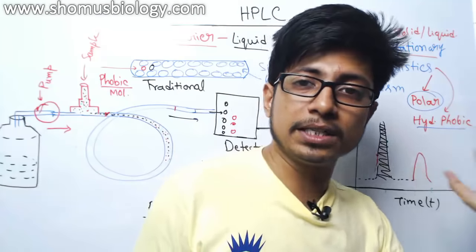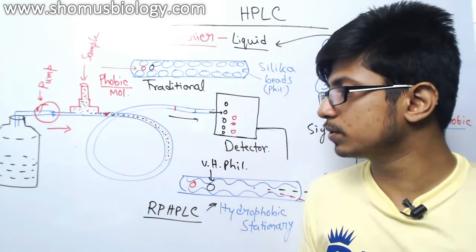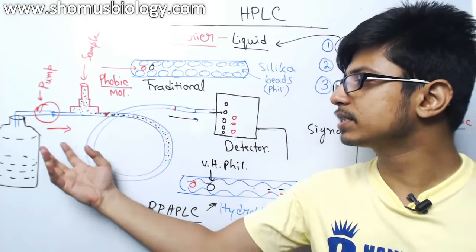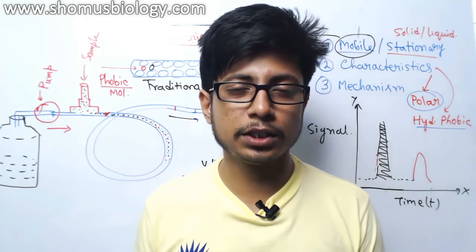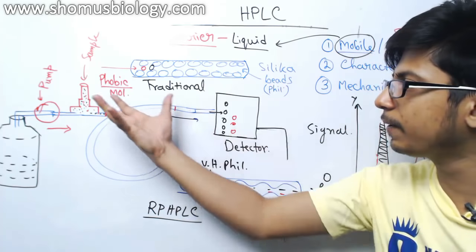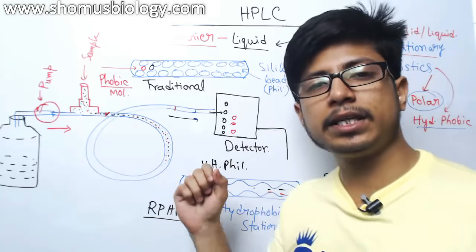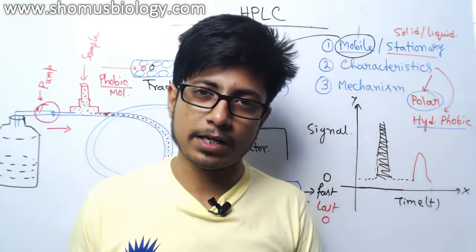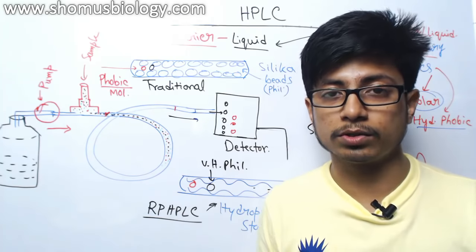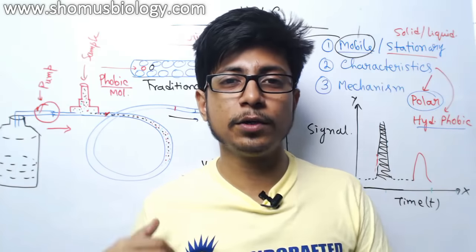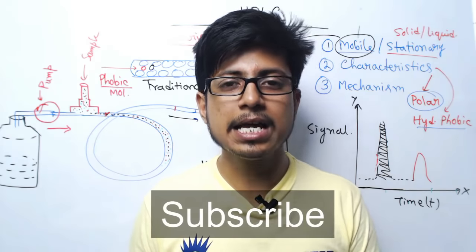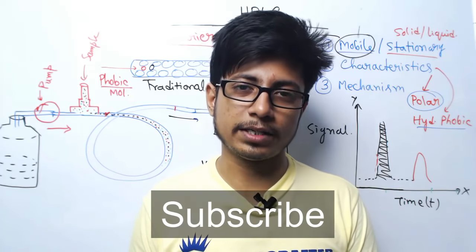In summary, HPLC relies on mobile and stationary phases. It is a very sensitive technique, though it can be costly. Running multiple samples together and having trained technicians improves its efficiency. HPLC is very fast, sensitive, and important in biological science. If you like this video, please hit the like button, subscribe to the channel to get more biophysics video lectures, and share this video with your friends. Thank you.